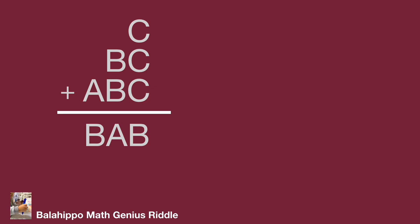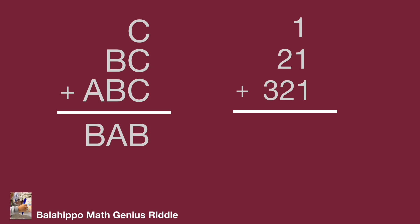What does the question mean? Take an example. If c equals 1 and b equals 2, then bc equals 21. And if a equals 3, then abc equals 321. Adding 1, 21, and 321 equals 343. Obviously, 343 does not fulfill the criteria bab, so that is not the right answer.